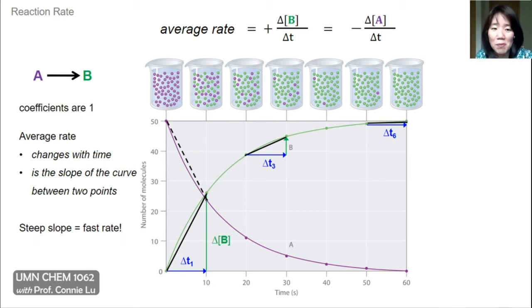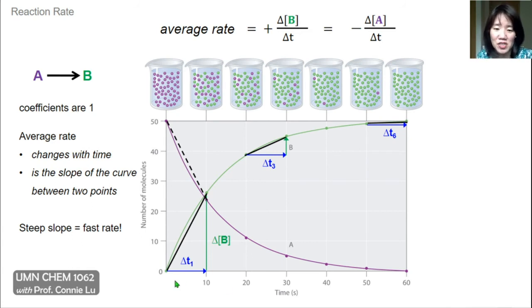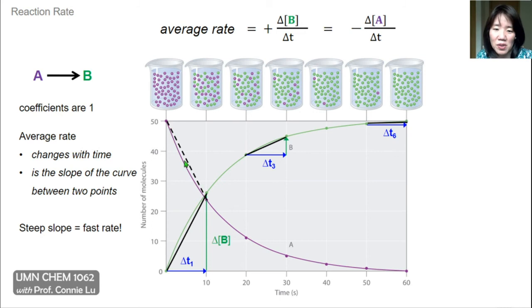Because in this reaction one molecule of A turns into one molecule of B — so the coefficients are all ones — the change in concentration of B in the first time interval is equal but opposite to the change in concentration of A, represented by the dashed line.